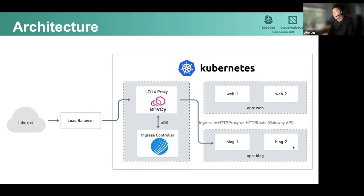Traffic then gets routed to the different applications in your cluster — for example, a web application and a blog application. Typically this routing behavior is defined using ingress YAMLs, where you specify a path and how that maps to a service in your cluster. You can use plain ingress objects, or the CRD we have called HTTPProxy — a much more prescriptive way of defining routing behavior. Gateway API has another option called HTTPRoute, which we're implementing today.